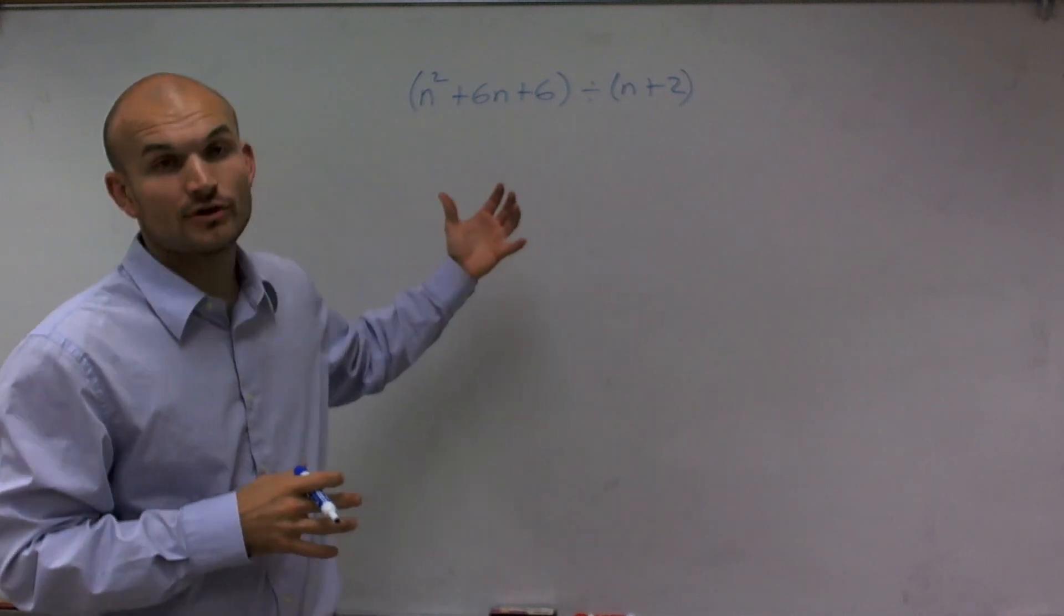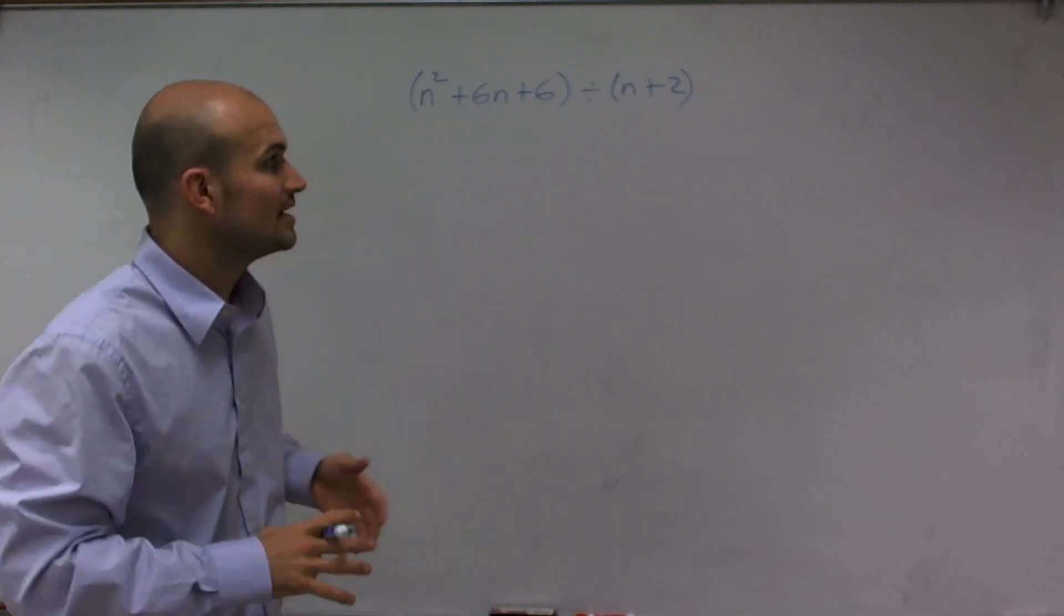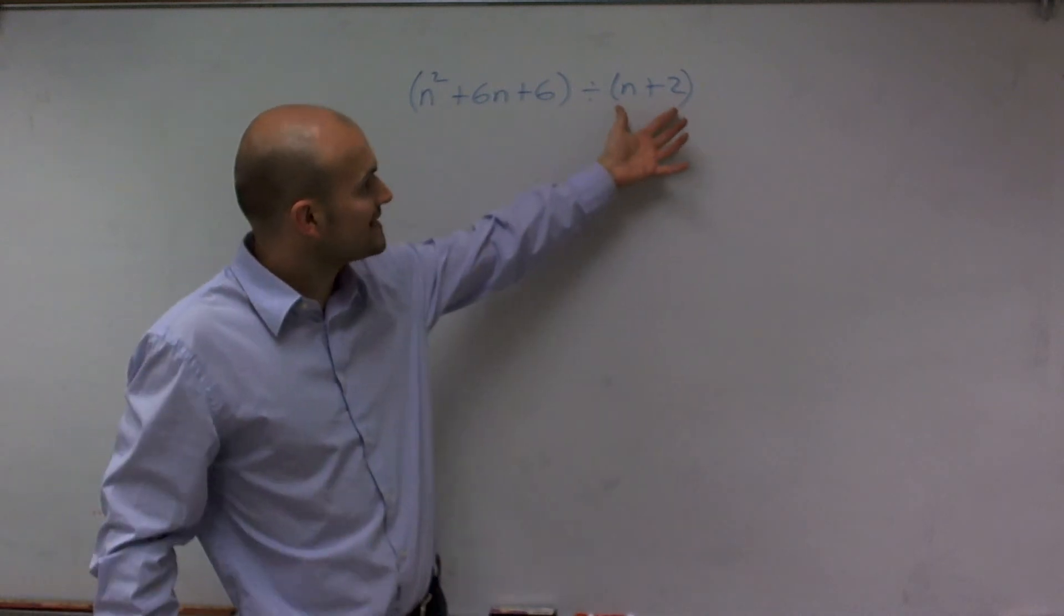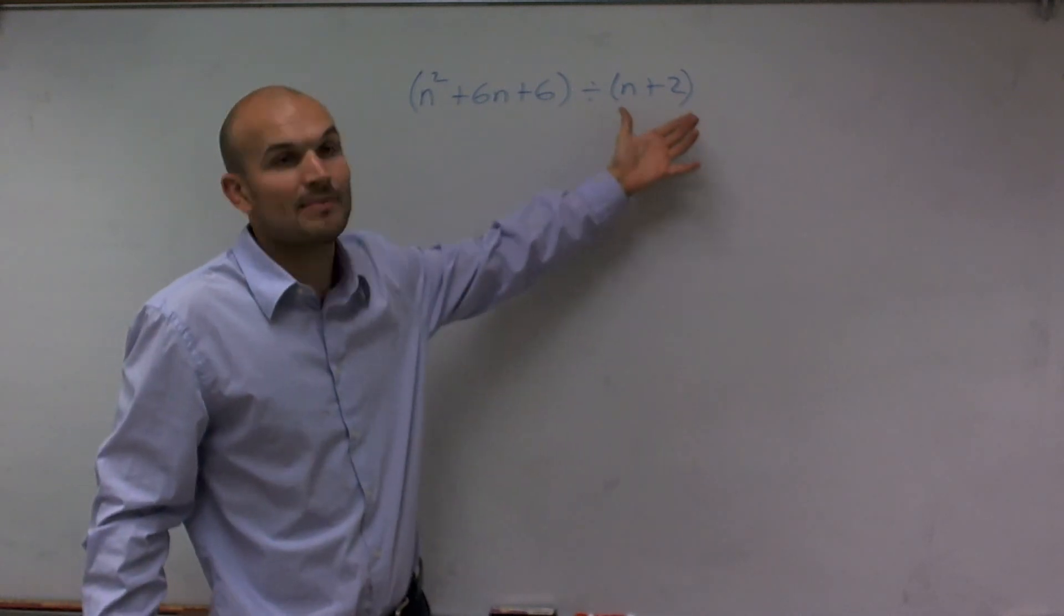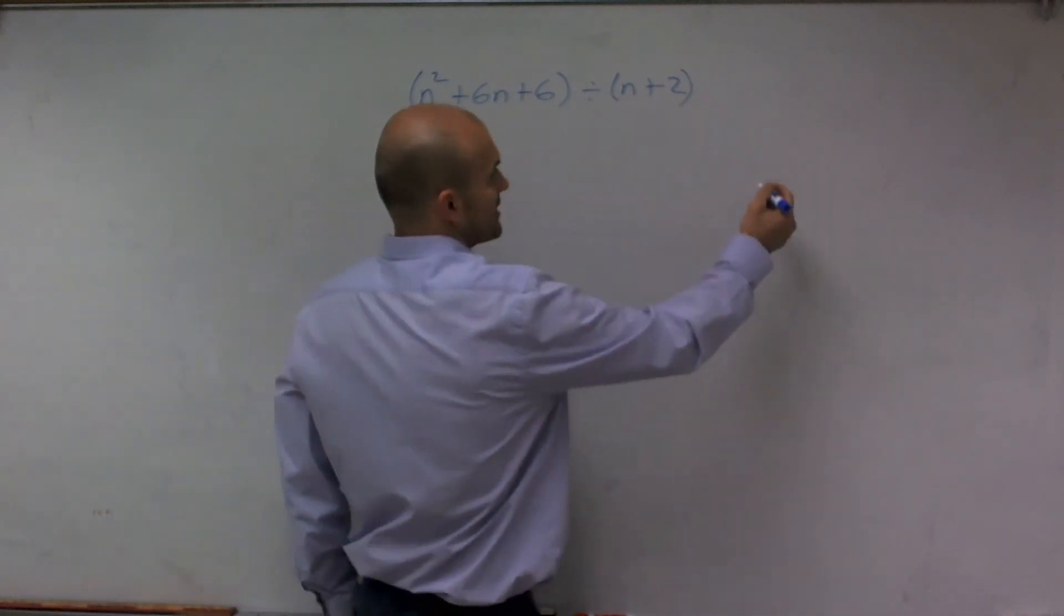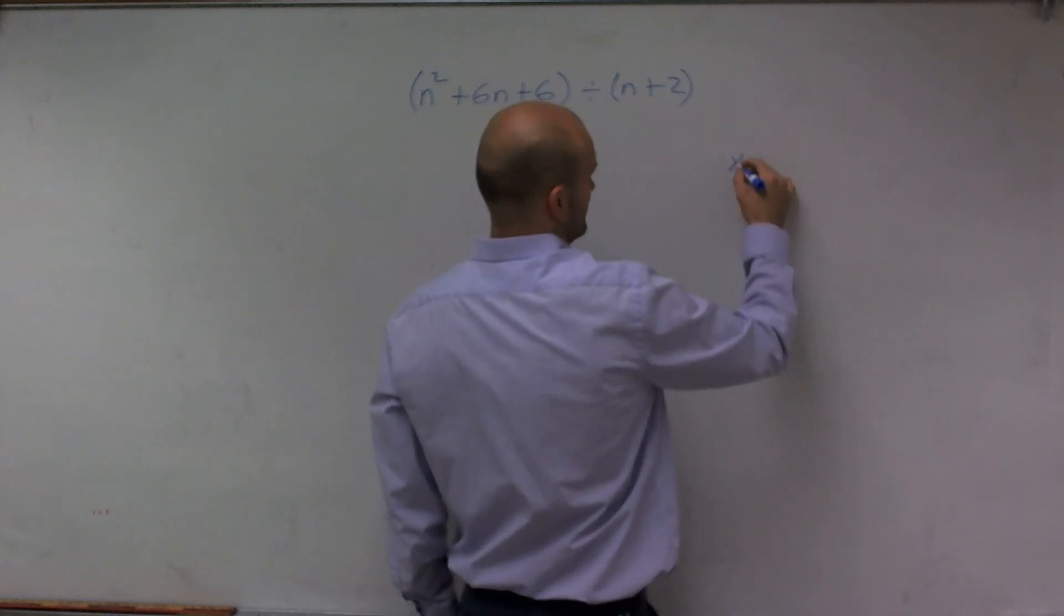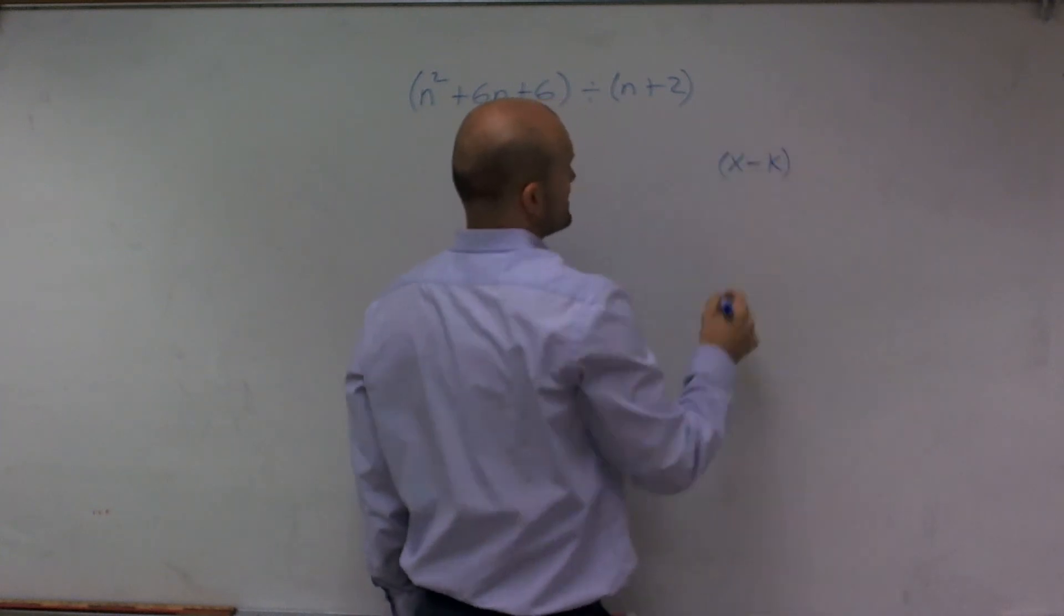And for this tutorial, I'm going to show you how to do it using synthetic division. Because whenever we have a binomial in the terms of n minus 2, or what we actually say is x minus k, when it's in that form,